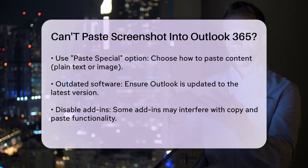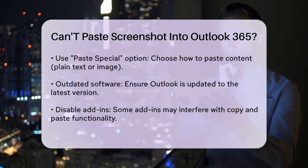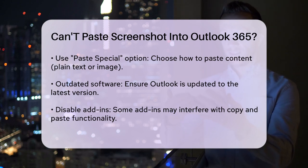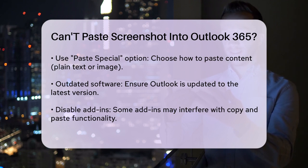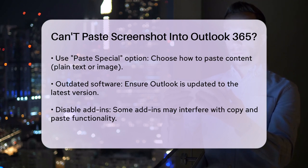Formatting can also cause problems. If the formatting of the content you're trying to paste is not compatible with Outlook, it might not work as expected. You can try using the Paste Special option in Outlook, which allows you to choose whether to paste the content as plain text or an image. This can help you retain the formatting you need or strip it away if it's causing issues.